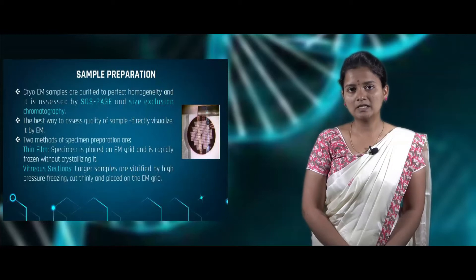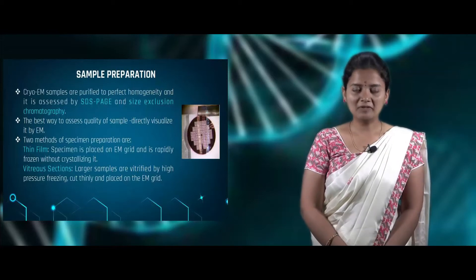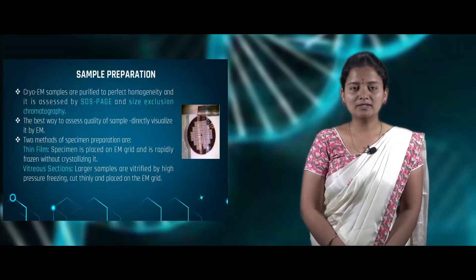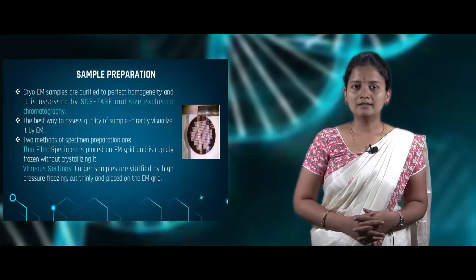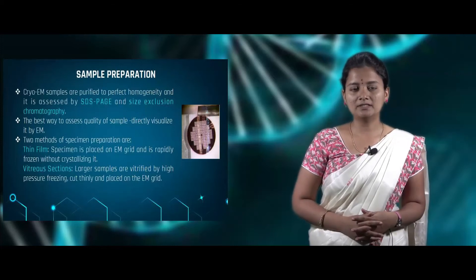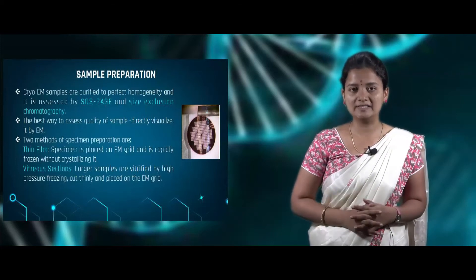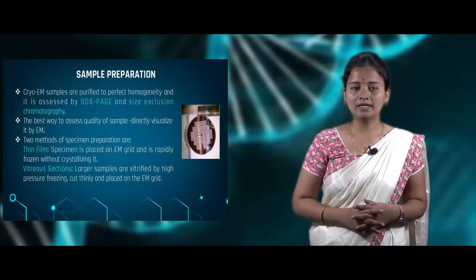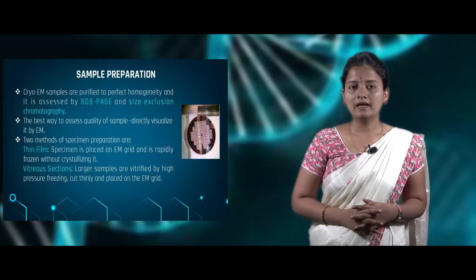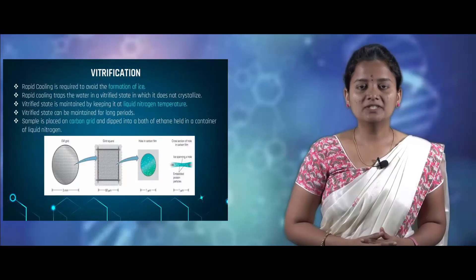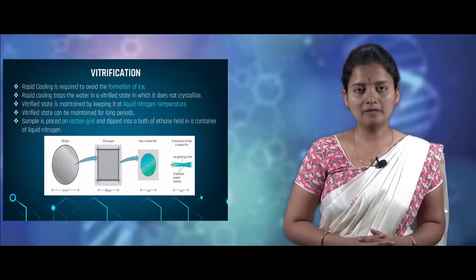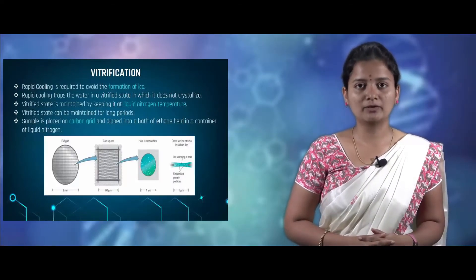Sample preparation can be done in two ways: thin film and vitreous specimen. In thin film preparation, the sample is placed on an EM grid and frozen without crystallization. In vitreous specimen preparation, the sample is subjected to high pressure freezing, then cut into very thin pieces and placed on an EM grid. These are the two ways of sample preparation for cryo electron microscopy.